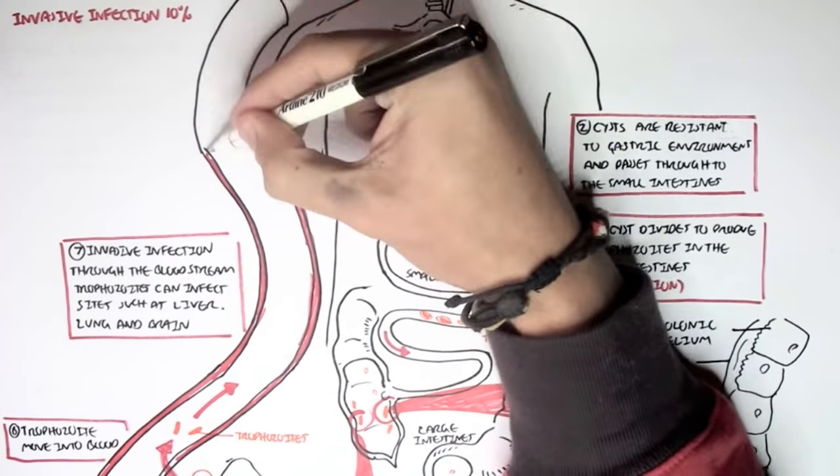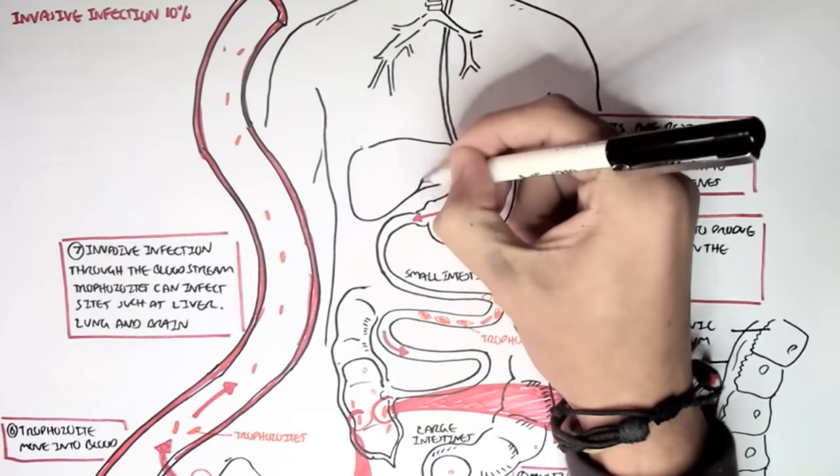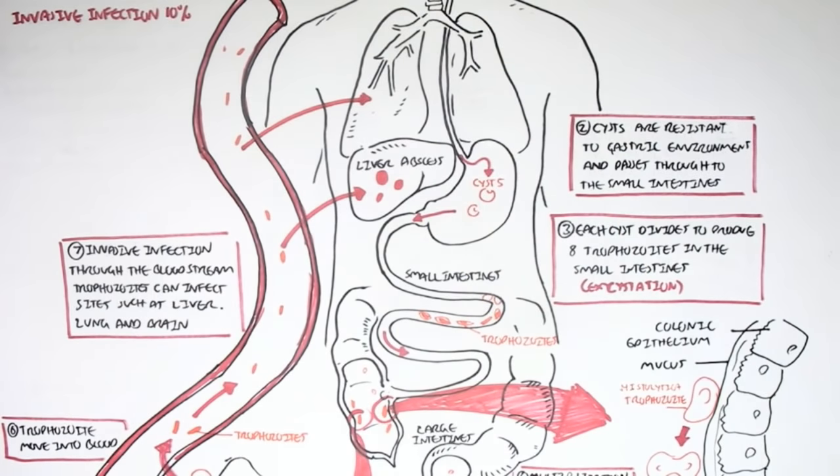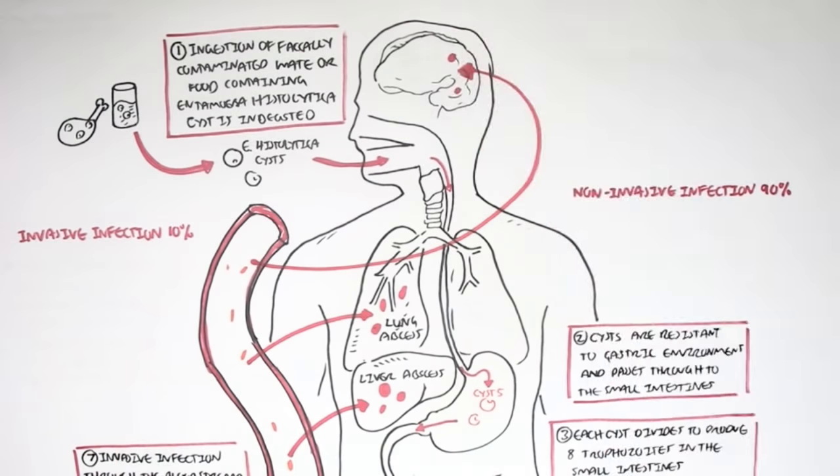For example, this trophozoite can infect the liver, forming liver abscesses. Or it can form the lung, forming lung abscesses, which is not very common. Or, very rarely, it can go into the brain and form brain abscesses.